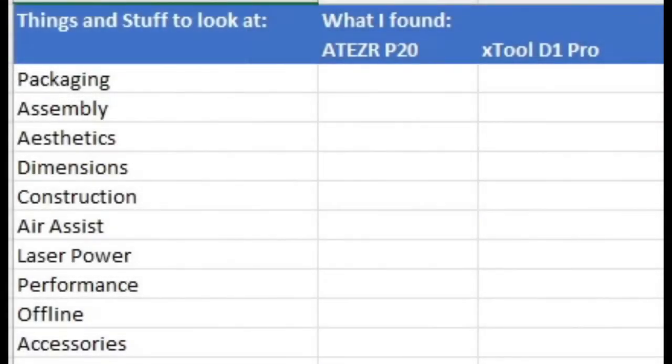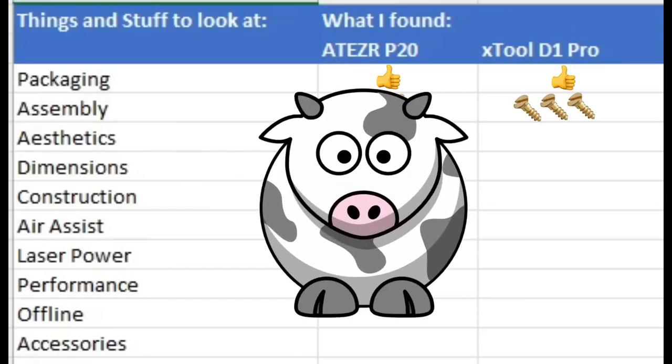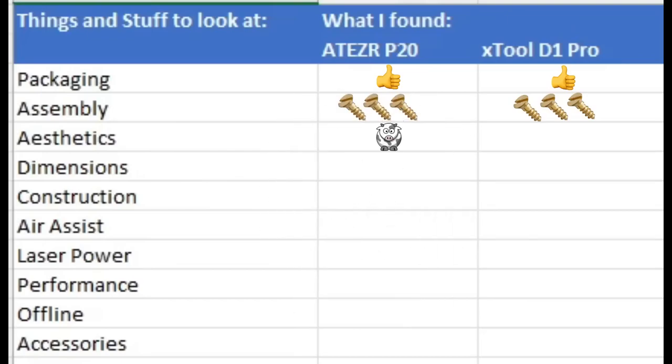Alright, so how would I rank these machines? Well, for packaging, they both did great. I give them both a thumbs up. I had them both assembled in 30 minutes flat, so I generously award each of them three flathead screws. And when it comes to aesthetics, the Ateser is a beefy machine. So, I give it one cow. And the X tool, with its red and gold and super sleek appearance, I give it one Iron Man.